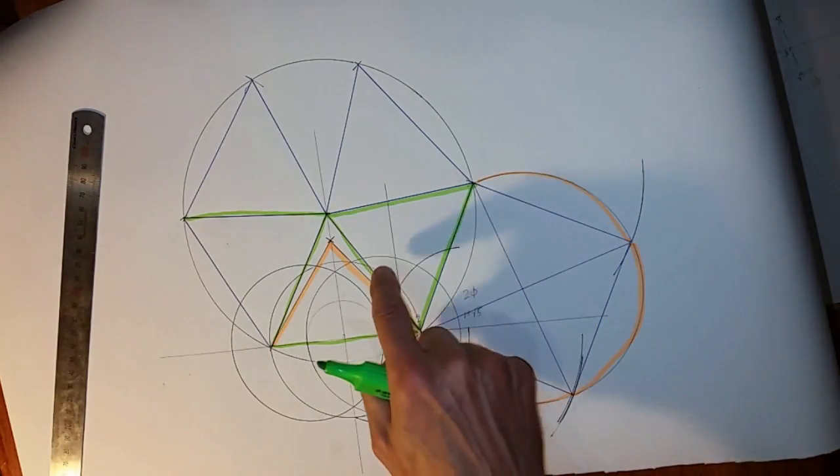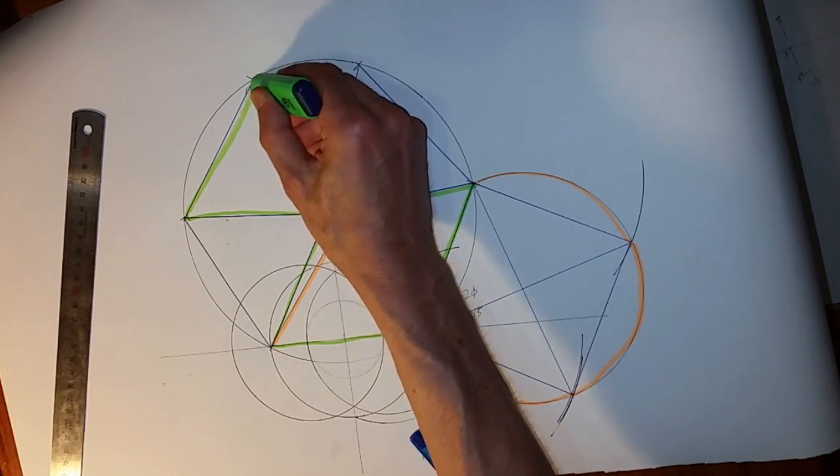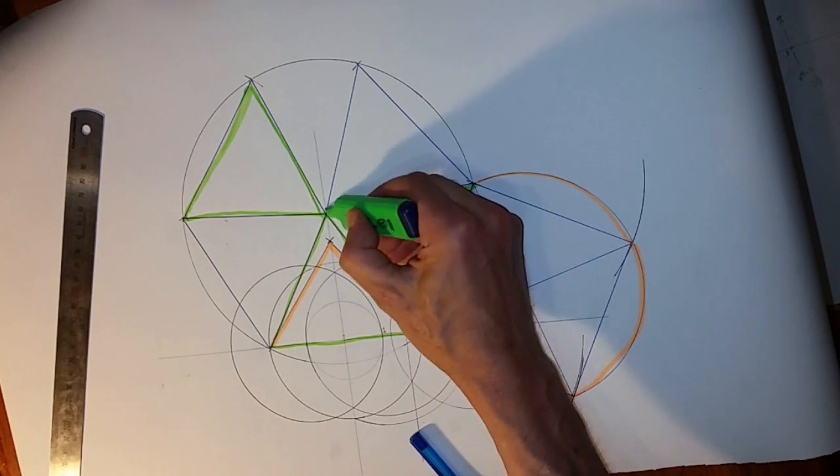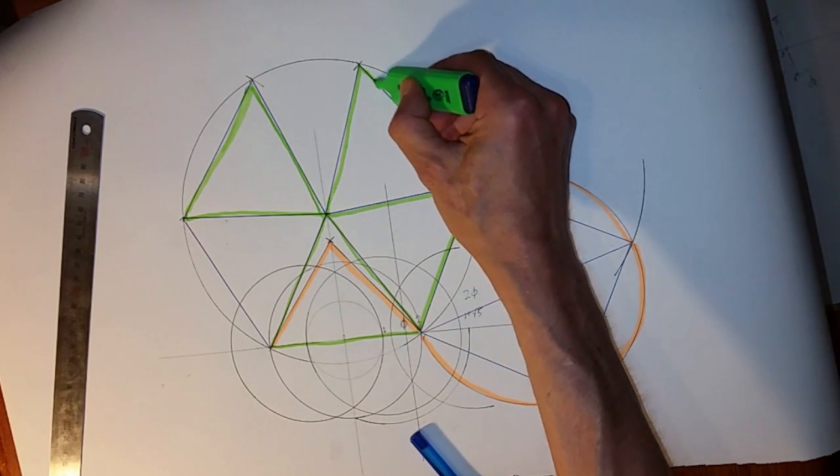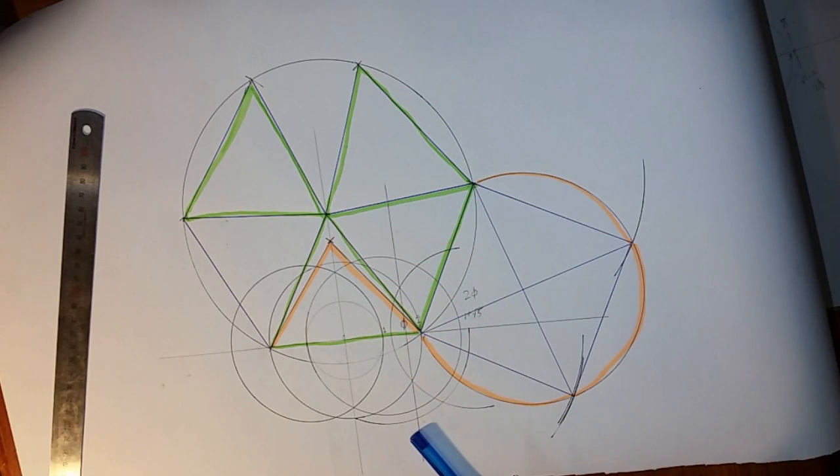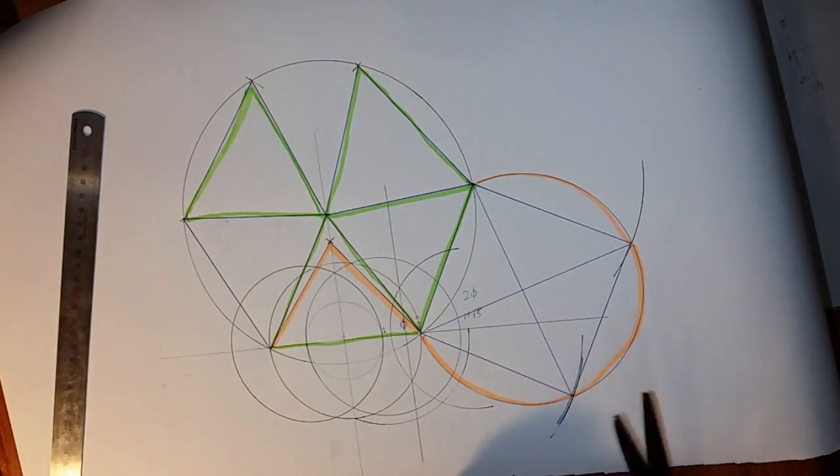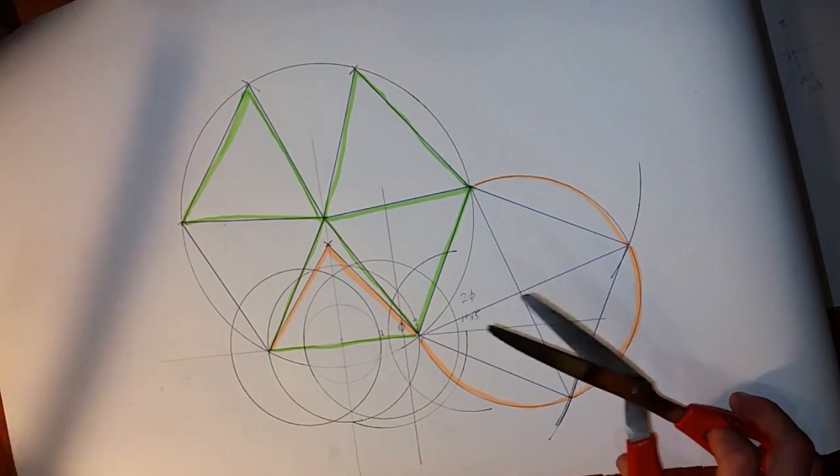So we have one, two, three, four, and this is our fifth triangle. Now that's not super essential, but it is helpful when we fold it all together. Now we have everything in shot, and let's do some cutting.